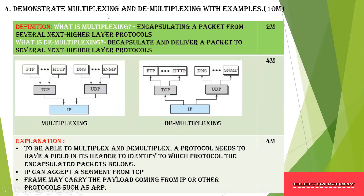Next is: demonstrate multiplexing and demultiplexing with examples. Multiplexing is encapsulating several packets from the higher level to the lower level. Demultiplexing is decapsulating the data and delivering it to several high-layer networks from the lower layer networks. For example, in the application layer, FTP and HTTP files are transferred to the transport layer, and DNS and SNMP are also transferred to the transport layer, and finally delivered to the internet protocol layer.